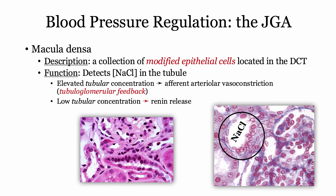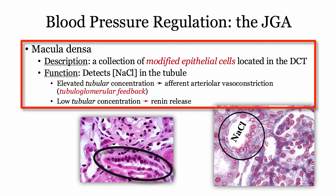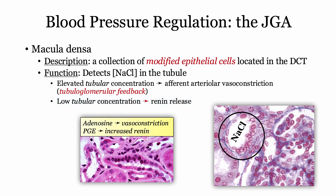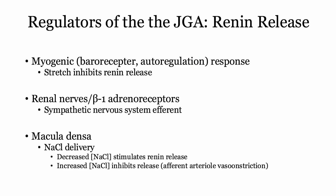Sticking with the juxtaglomerular apparatus, let's move on to the macula densa. These are described as a collection of modified epithelial cells located in the distal convoluted tubule. The function of the macula densa is to detect changes in tubular salt concentration. When there is ample salt detected, in a process referred to as tubuloglomerular feedback, the afferent arteriole constricts and renin release is inhibited. If a low concentration of salt is detected, as in volume depletion, renin release is triggered. The two main mediators of this process are adenosine and prostaglandins. Remember, adenosine in the kidney functions as a vasoconstrictor, turning off the release of renin.